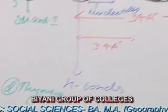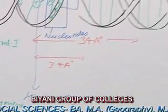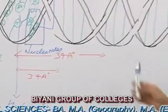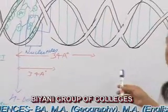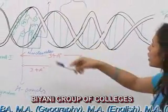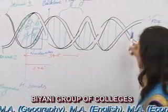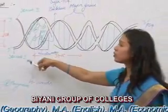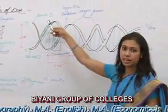Now, the secondary structure of DNA for the B-type of DNA. As you can see here, there are two helices — strand one and strand two.